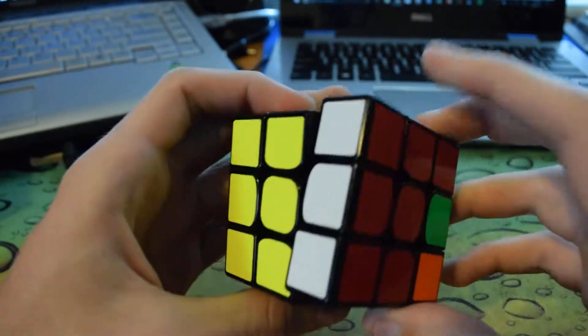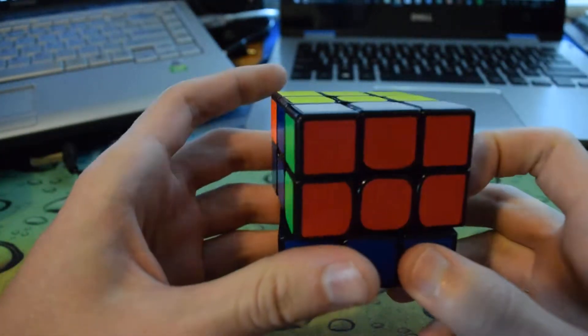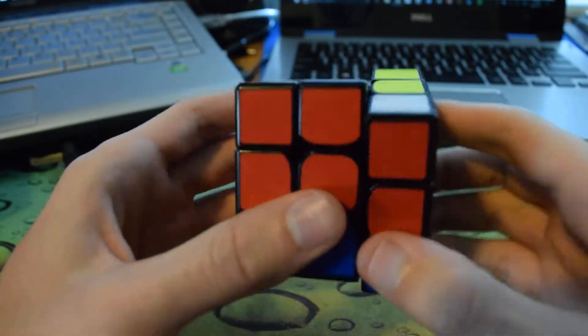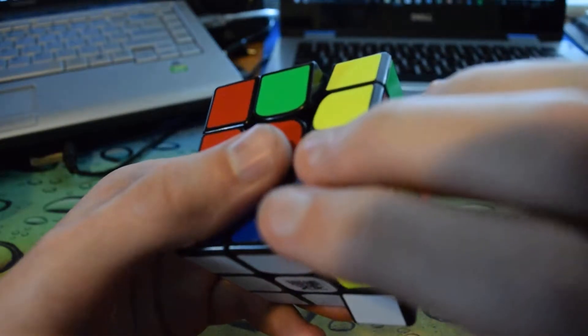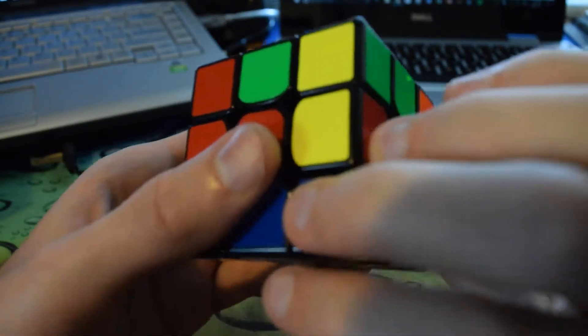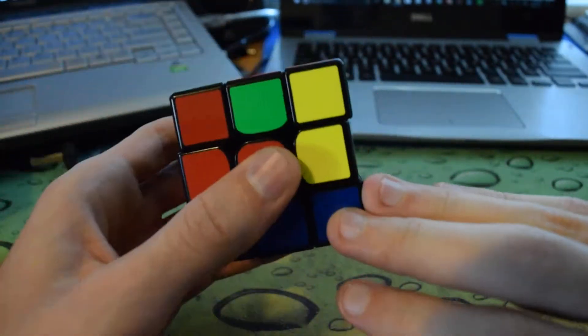So you go down, right index finger push, and then just R prime, U with that finger, and then R prime again. And then U prime with this finger back here.